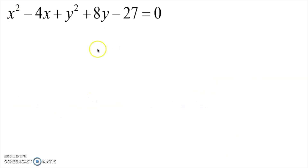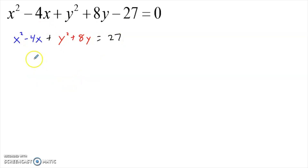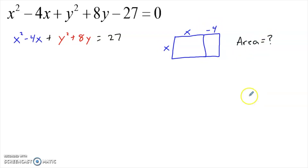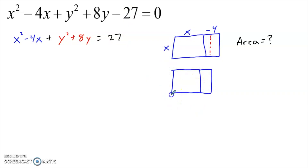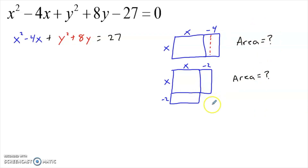Here we have a circle in standard form — we know it's a circle because there's an x squared and y squared, each with coefficient 1. First, I get the x squared terms and y squared terms together, pushing the constant 27 to the other side. I have my x by x square and my -4x rectangle, but I don't know the total area — because the y squared plus 8y also contributes to the 27.